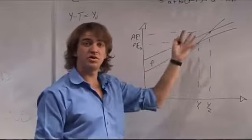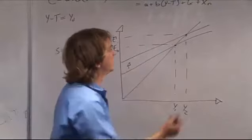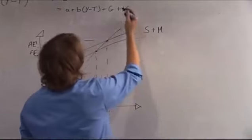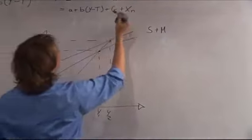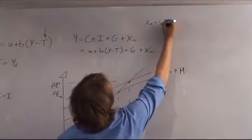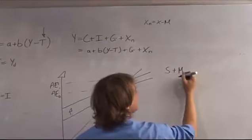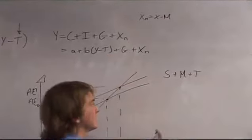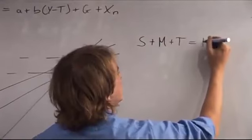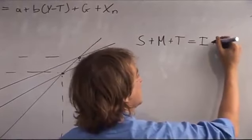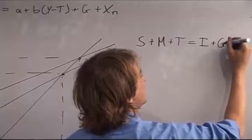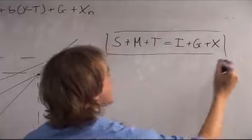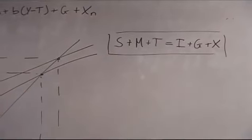In this case, this is the complete model — this is all you'll need to know. The leakages, which are savings plus imports — since XN equals X minus M, you minus imports, so it's a leakage — plus taxes, since you minus taxes. So these are all your leakages. They must be equal to your investment, which is an injection, plus your government spending, plus your exports. So in equilibrium, your injections must be equal to your leakages.